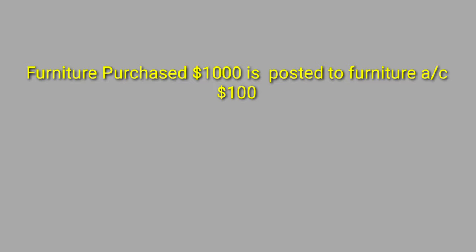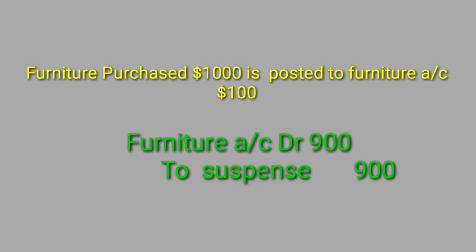Next question: furniture purchased 1,000 is posted to furniture account as 100 — this is a case of wrong amount posting, therefore it's a one-sided error. The two accounts are suspense and furniture. At the time of posting, furniture account was debited with a lesser amount — only 100. So we need to add the difference of 900. The rectifying journal entry will be: furniture account debit to suspense — 900.